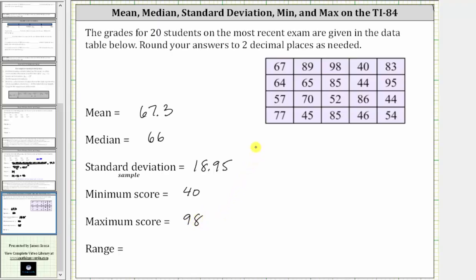The only value we can't get from the TI-84 is the range. The range is the maximum minus the minimum, which in our case is 98 minus 40, which is equal to 58.